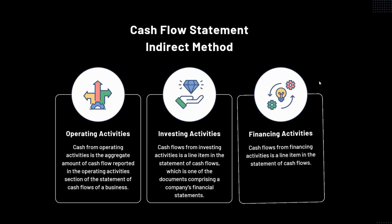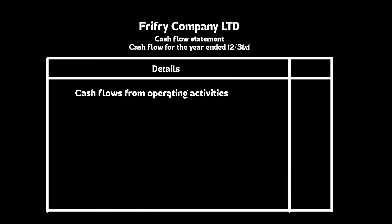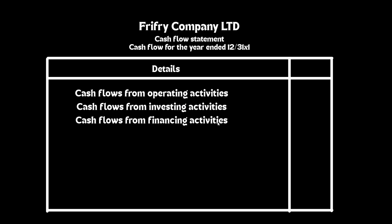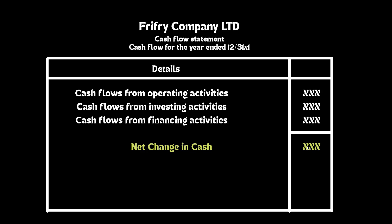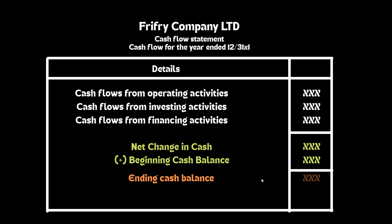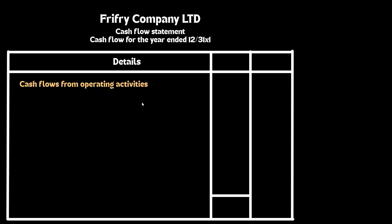Now we will discuss how it is prepared. There are three activities in a cash flow statement. Number one, cash flow from operating activities. Number two, cash flow from investing activities. And number three, cash flow from financing activities. We need to add all balances of these three activities and after that we'll get the net change in cash. If we add the beginning cash balance with it, that will give the ending cash balance.